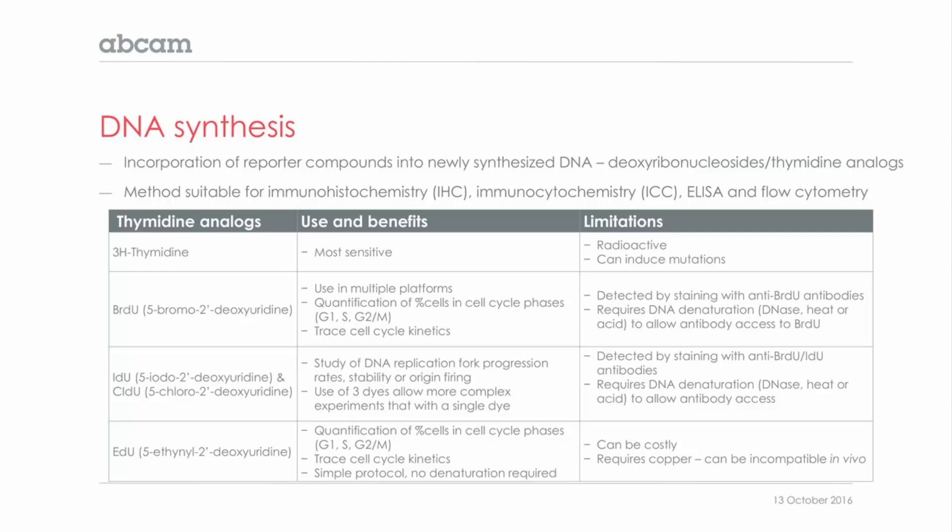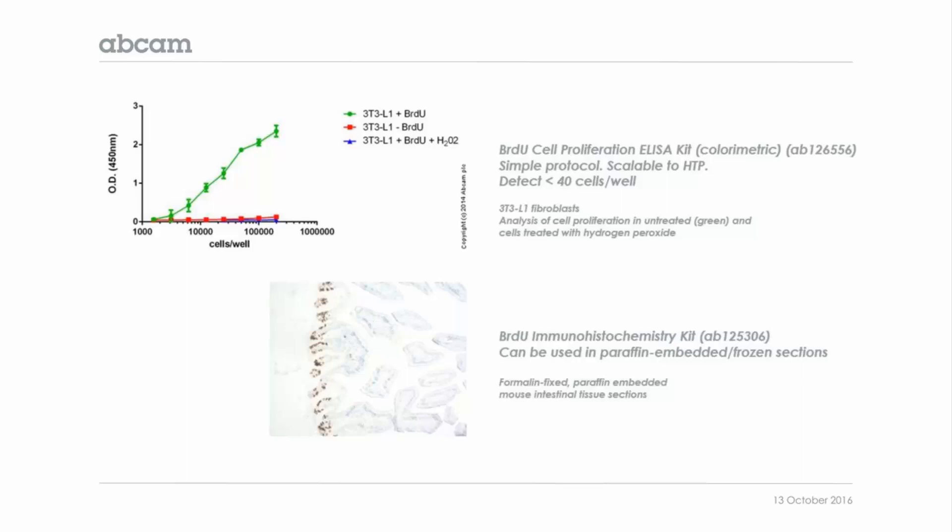EdU is the youngest member of this analogue family. In comparison with the previous ones, it does not rely on antibodies and therefore does not require a denaturation step. The EdU incorporated into the new DNA strand can be detected by a copper-catalyzed reaction using a fluorescent dye. Here you can see examples using BrdU for proliferation: the top panel shows C2C3 fibroblast proliferation measured by BrdU ELISA assay, where increasing signal correlates with increasing cell number. The lower panel shows BrdU used to visualize proliferating cells in mouse intestinal tissue sections by immunohistochemistry.